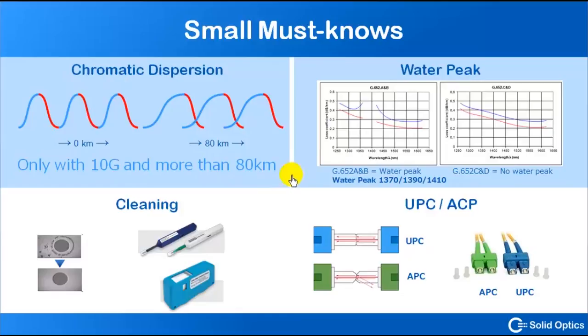Another important thing to know is that you've got an older fiber type, that's the G652A and B, which have something called the water peak. The water peak is a phenomena where the attenuation is so high that no light can pass through. Waves 1370, 1390, and 1410 are affected by this, but 95% of the fiber in the world nowadays is C and D, which don't have the water peak.